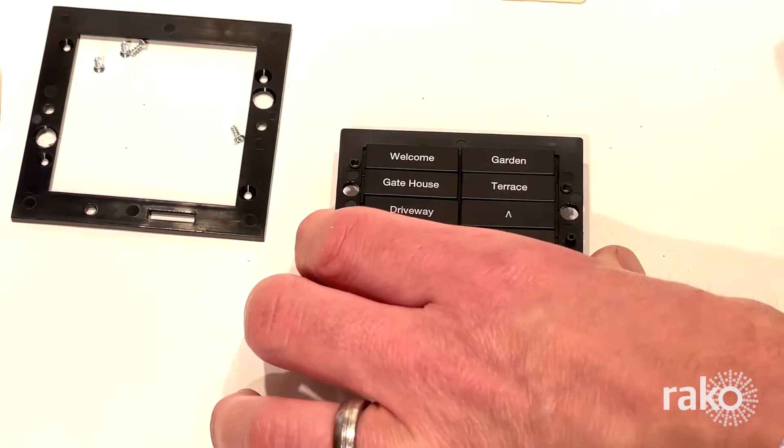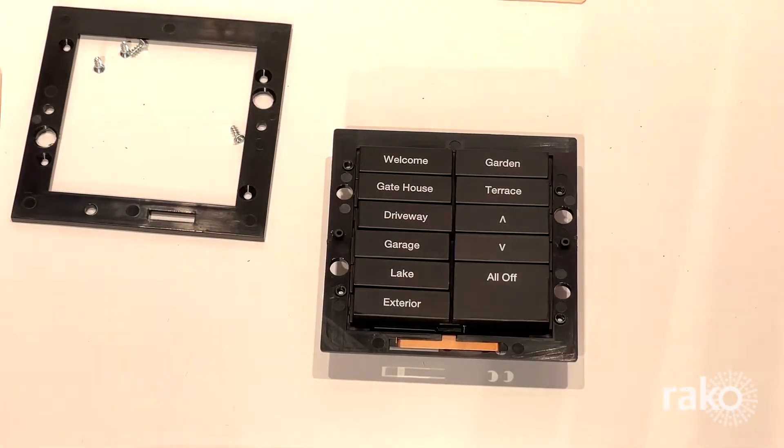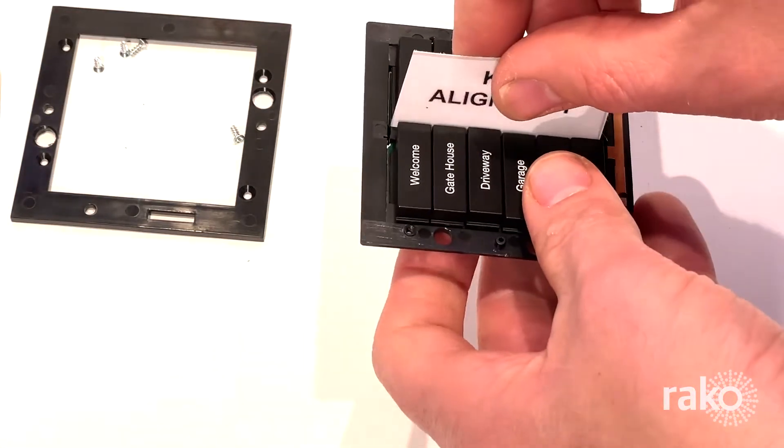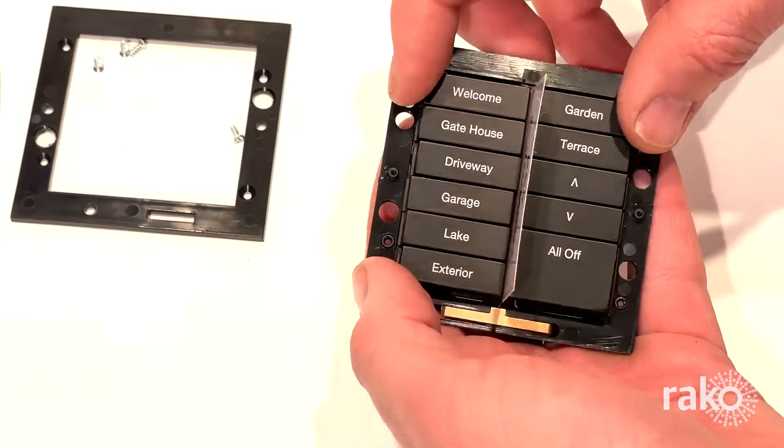Once you've installed the two screws on the rear of the keypad, flip it back over and get your key alignment card which came with the jig. Place the alignment card between the buttons and gently pinch the buttons back together and remove the card.